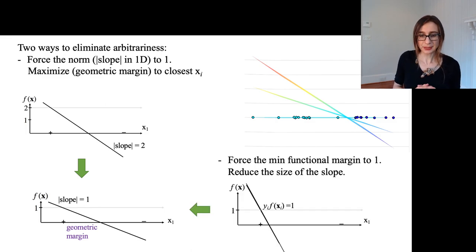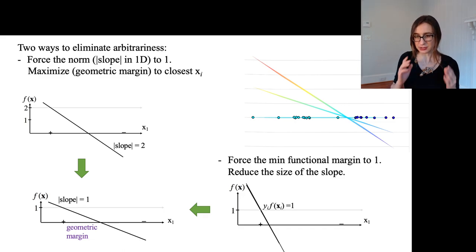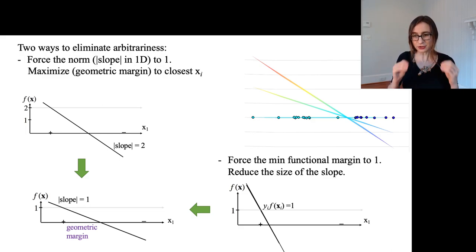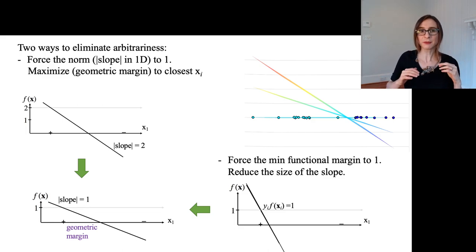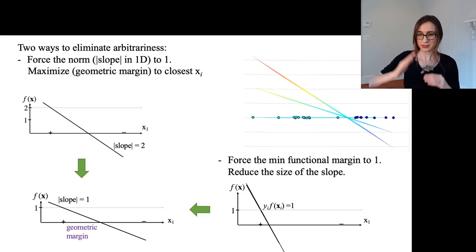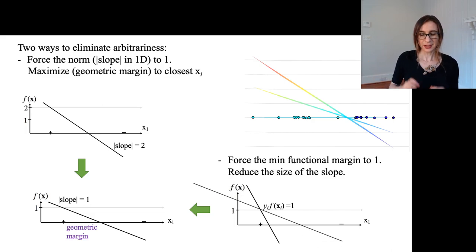Support vector machines don't actually do that — they do something different. They force the minimum functional margin to one and reduce the size of the slope. So they take Y times F, where F is the unnormalized function, and say: let's force all of those unnormalized margins to be at least one. From there, we try to make the slope of this line as close to horizontal as possible — flatten it out as much as possible. These two mechanisms have the same result, which is really interesting.